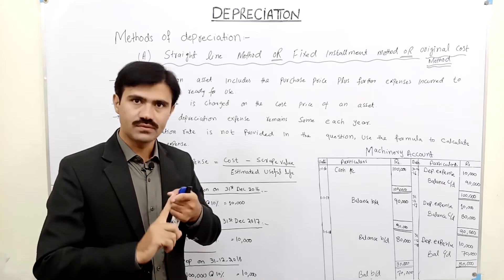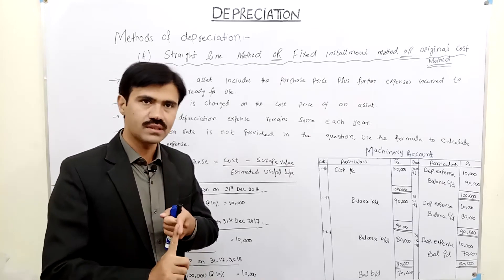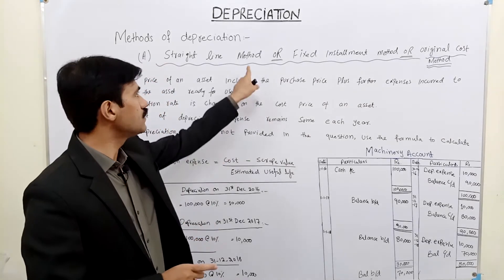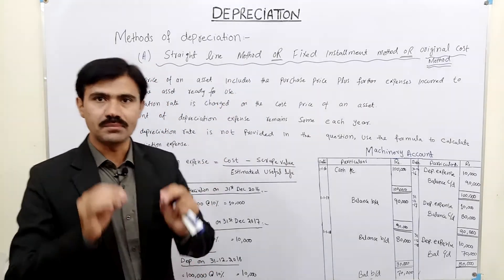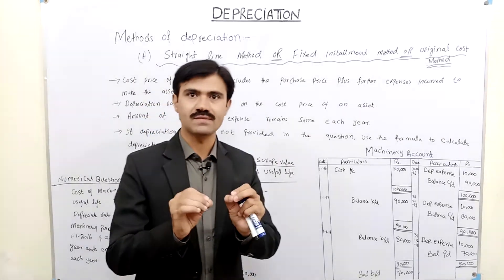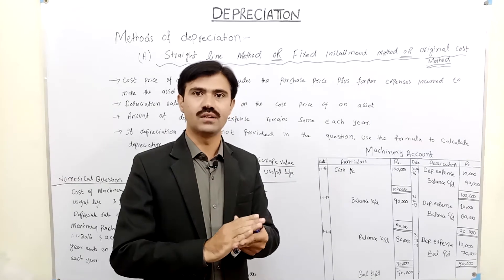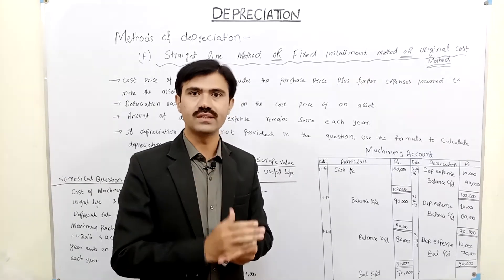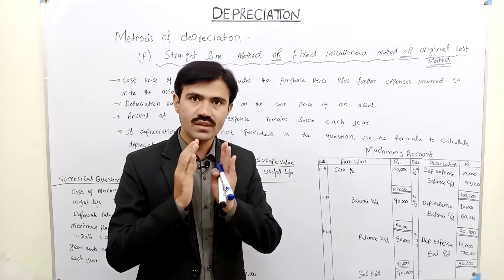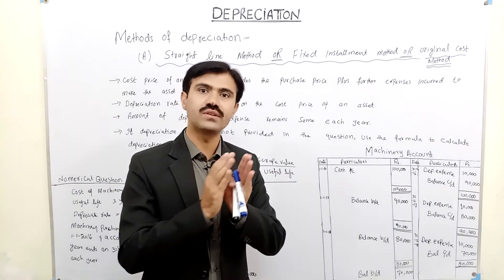In the fixed installment method or straight-line method, the depreciation expense is the same every year. The depreciation rate is applied to the cost price of the asset.